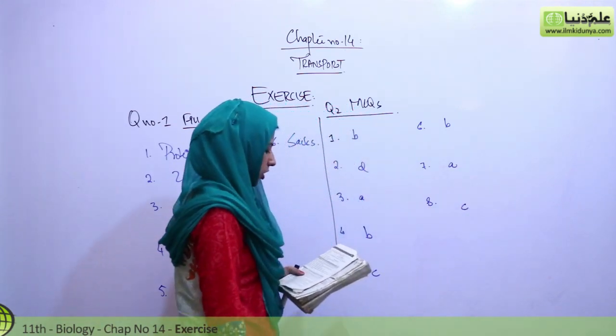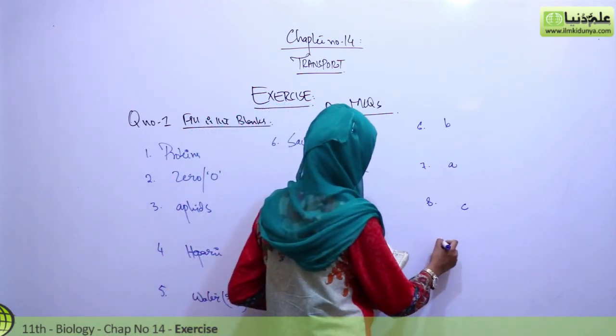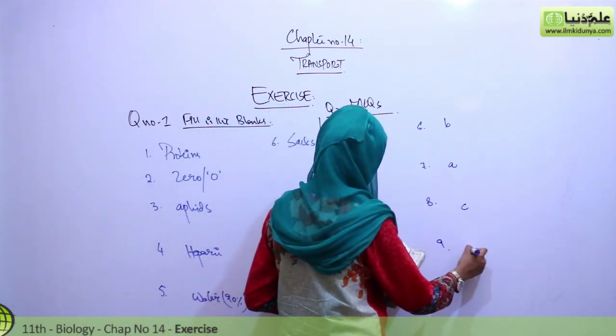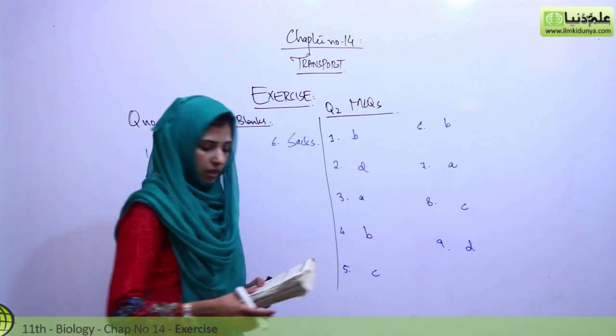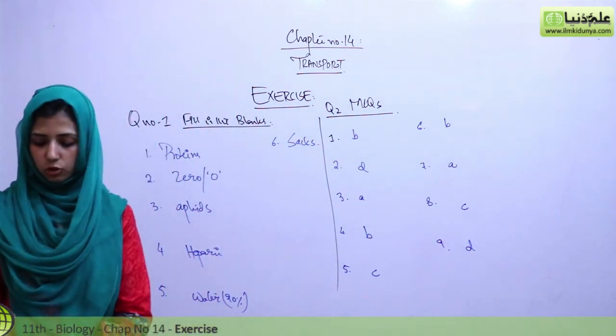Ninth is, cardiac muscles can be distinguished because of option D, they are having intercalated discs. After that we have true false.